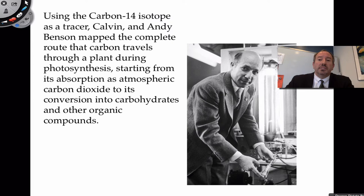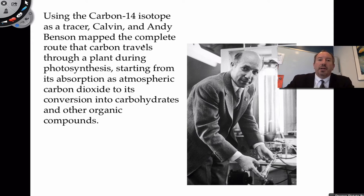Calvin had colleagues helping him, one in particular being Andy Benson. Sometimes the cycle is called the Calvin-Benson cycle as a result of those contributions, although Melvin Calvin was the only one to receive the Nobel Prize. He was able to map the complete route that carbon takes when it starts off in carbon dioxide, all the way into conversion to carbohydrate.